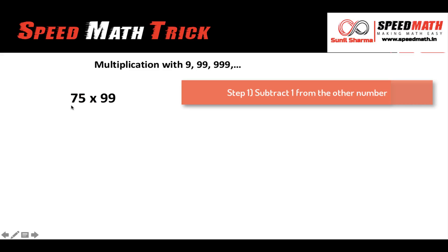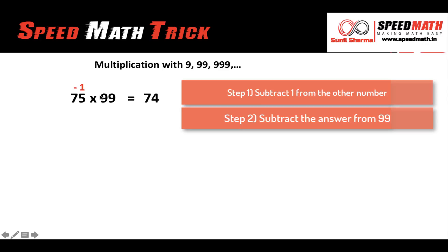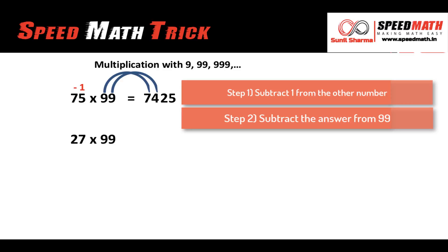It's a two-step process. Step 1: subtract 1 from the other number. The other number is 75, so 75 minus 1 gives us 74. Step 2: subtract that answer from 99. So 9 minus 7 is 2, and 9 minus 4 is 5. That's the answer — 75 times 99 equals 7425.